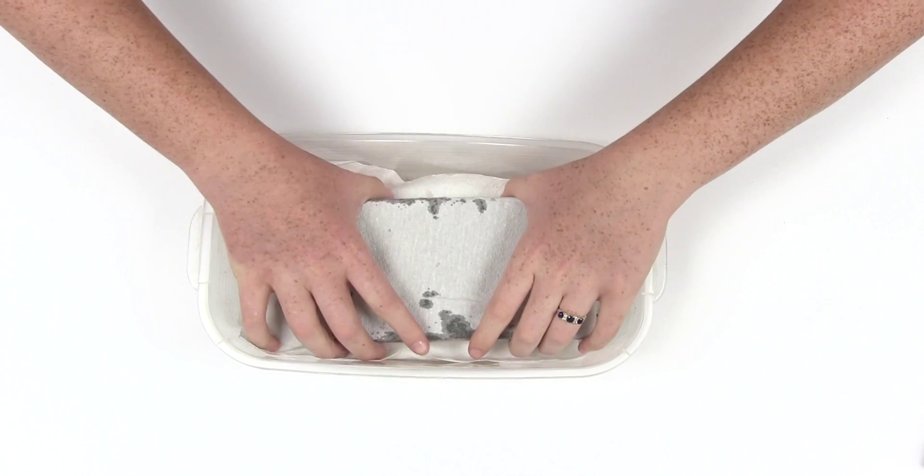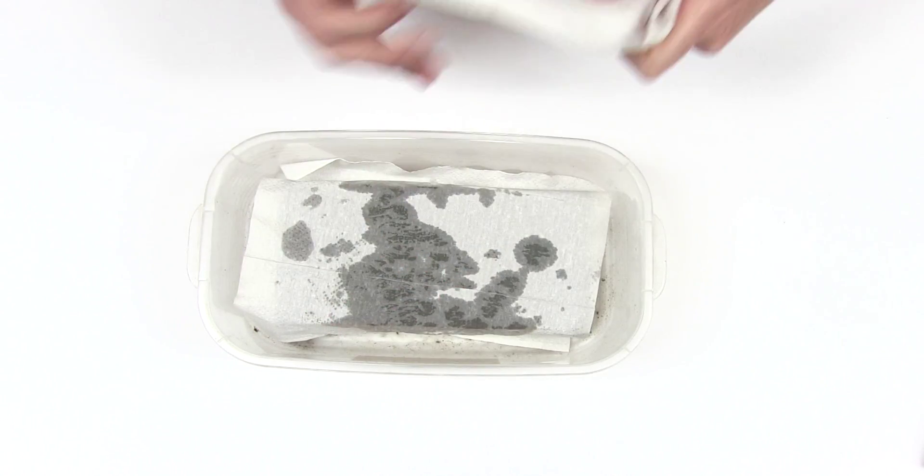Put a few layers of paper towel on top of the oasis. Two to three layers is usually sufficient.